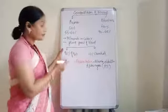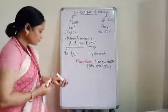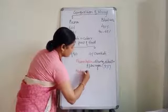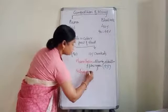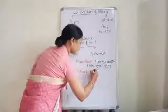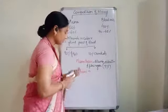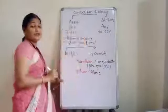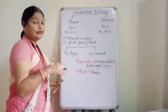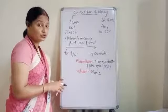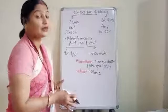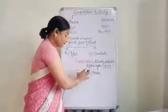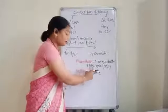Now, what about the other 2%? In that 2%, we have nutrients. The important nutrient is glucose — we take sugar and starch, everything gets digested and finally converted into glucose, which is absorbed by the blood cells and goes into the plasma. The total composition of nutrients is 0.1%.